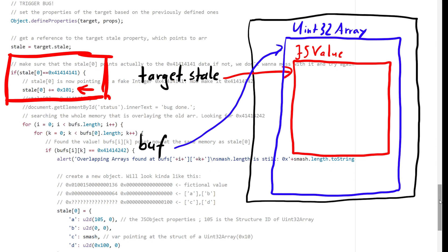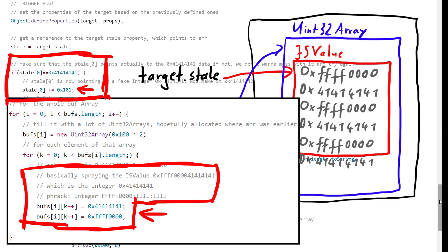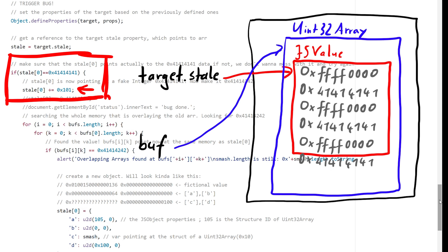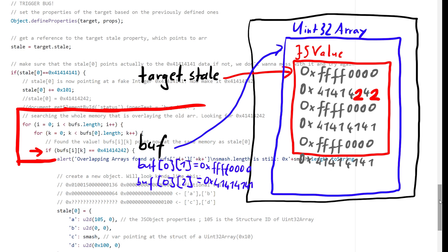You can use the uint32 arrays accessible via buff to read and write raw bytes at the location where the stale property thinks a standard JavaScript object is. So first we have to find if and how buff and the stale array overlap. To do this we can simply add a number to the first element of stale. What is the first element of stale now — isn't that garbage memory? Well ideally, if everything works, it points where we created the uint32 arrays, and we populated that memory region with 0xFFFF000041414141, which is a JSValue representing the integer 0x41414141. This means we add 0x101 to the first element of the stale array, making it the integer 0x41414242. We can now simply search through the whole uint32 array memory buff looking for this 0x41414242. Keep in mind that buff has access to raw bytes, so it will also see the 0xFFFF0000 and the 0x41414141, while the stale array thinks this is a JavaScript object and only uses 0xFFFF0000 internally to determine it's an integer with value 0x41414141.